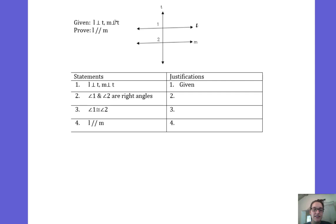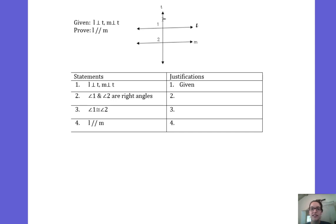Remember, this little upside-down T symbol is the symbol for perpendicular. So when lines are perpendicular, we can say in our proof that they are creating a right angle. Line T and line L create angle 1, so we can say angle 1 is a right angle. Line T and line M create angle 2, so we can say angle 2 is a right angle.